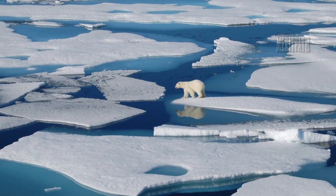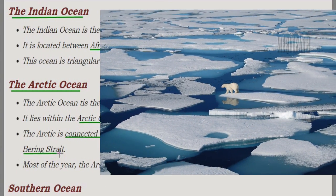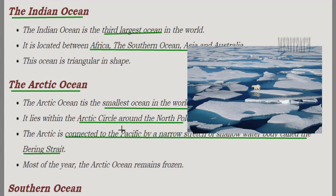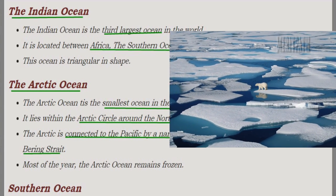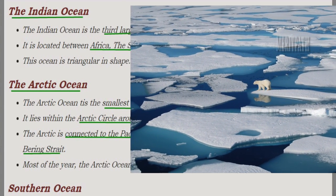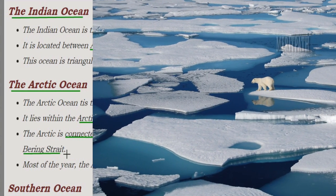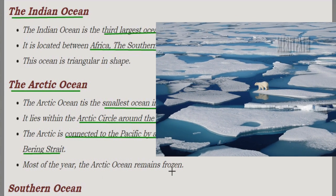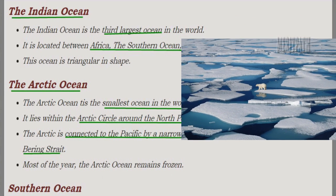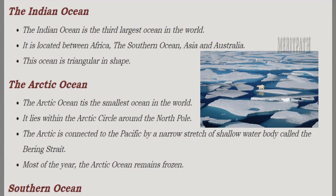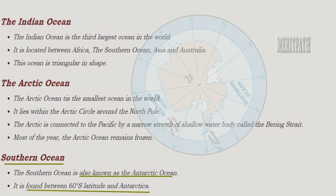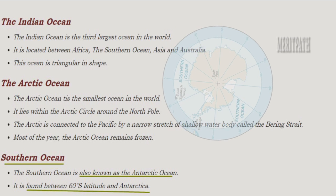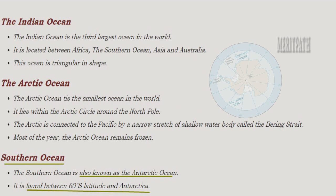The Arctic Ocean is the smallest ocean in the world. It is located in the Arctic Circle, surrounding the North Pole. It is connected to the Pacific Ocean by a narrow stretch of water known as the Bering Strait, and most of the time it remains frozen due to cold temperatures. The Southern Ocean, also known as the Antarctic Ocean, is found between 60 degrees south latitude and Antarctica.